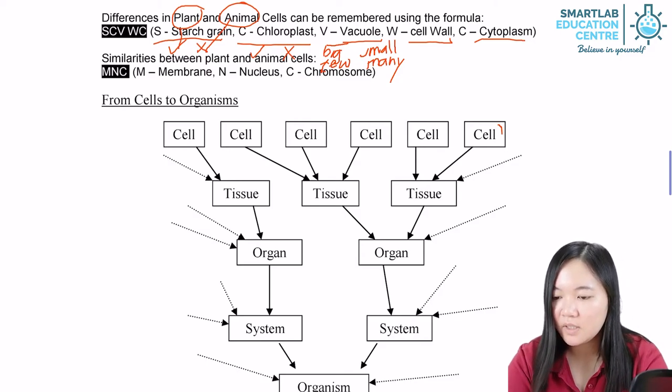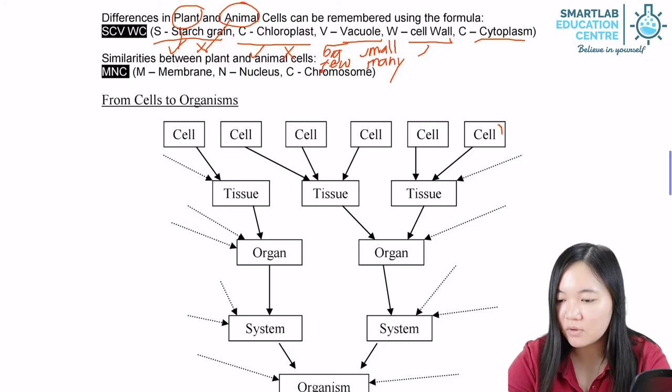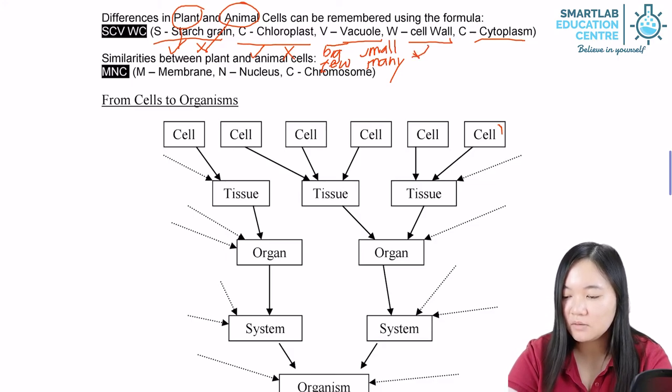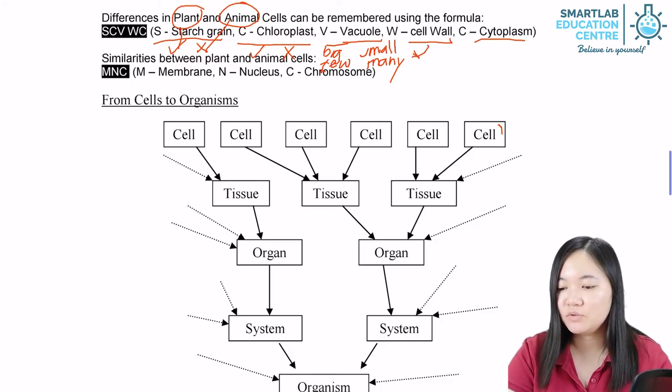Cell wall. Plant cells have cell wall. Well, animal cells do not.